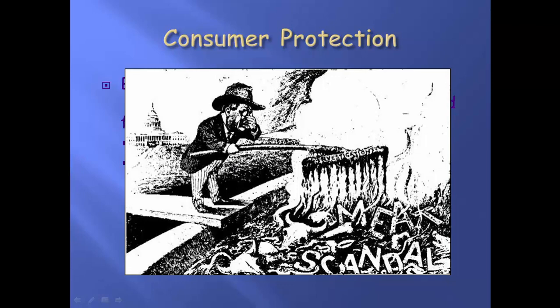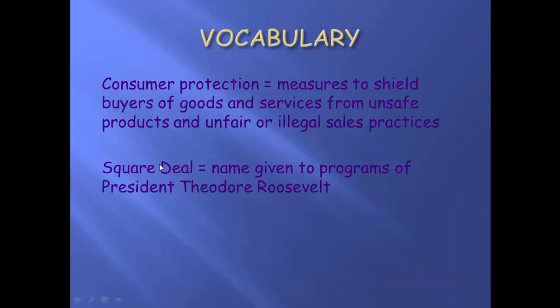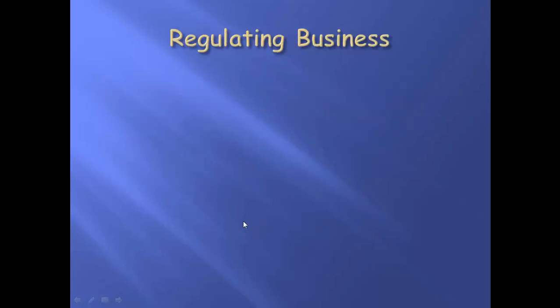So if you saw this — there's Teddy, there's a huge meat scandal, it stinks, he can't breathe it, there is an investigation, and he calls Congress to make sure that laws are made to stop this from happening. Consumer protection is your vocab there, and the Square Deal is the name given to Roosevelt's programs to treat everybody equally.